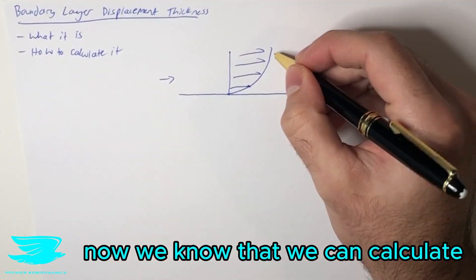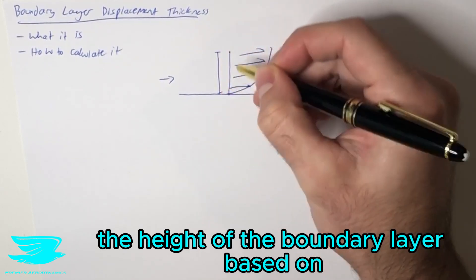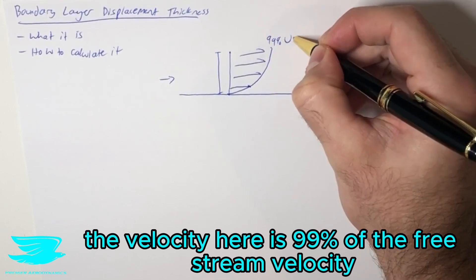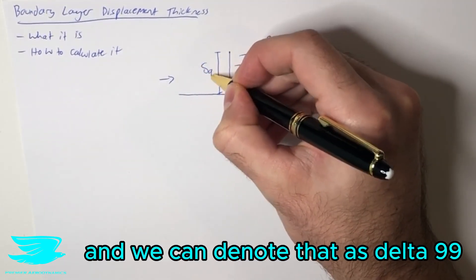Now we know that we can calculate the height of the boundary layer based on the point at which the velocity here is 99% of the freestream velocity, and we can denote that as delta 99.